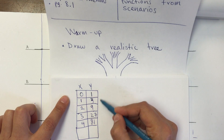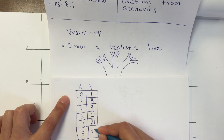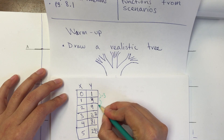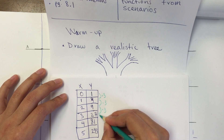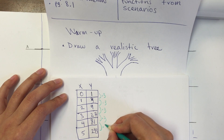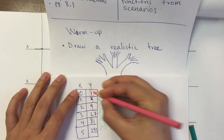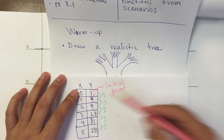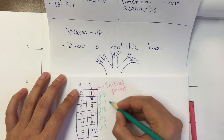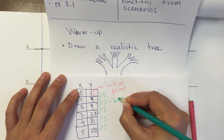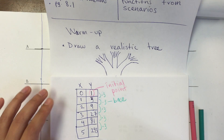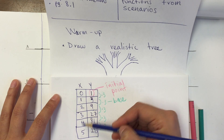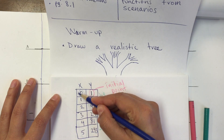So what's going on? What's the pattern that we see here? We're multiplying by three — times three, times three, times three. We're going to call this our initial point, and this pattern right here is called the base. On this side we have how often this happens at every knot, and we're going to call that our cycle.